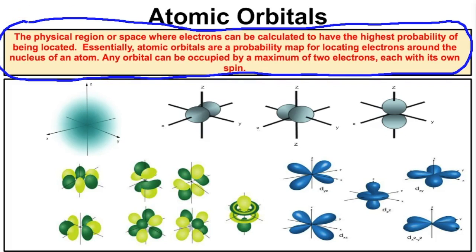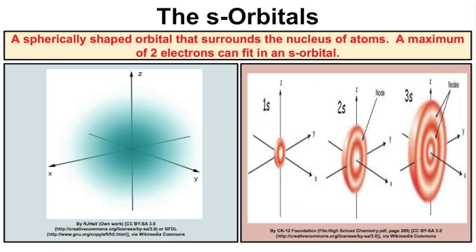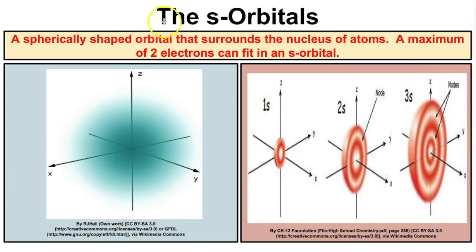There are all kinds of different orbitals we're going to talk about. For example, there are s orbitals, p orbitals, d orbitals, and f orbitals. Your teacher might call them sublevels — I'm simply calling them orbitals, which makes it a bit easier.